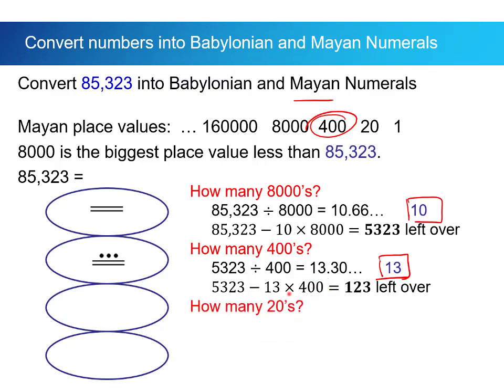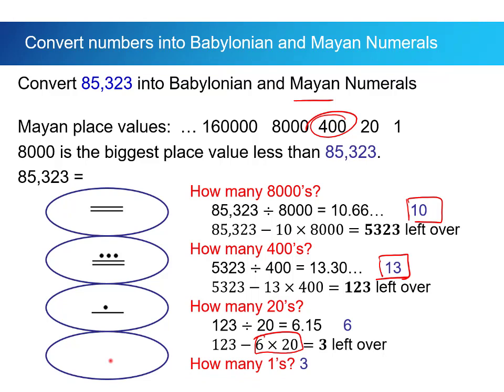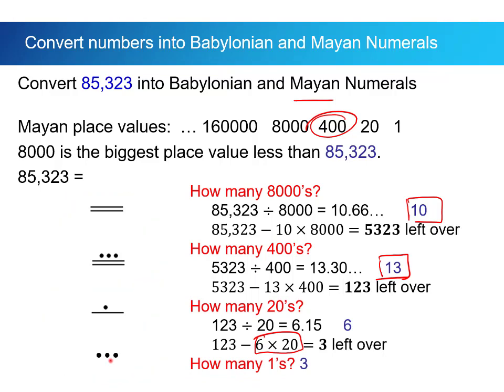How many 20s are there in 123? We do the division. We find out that there are six 20s in there. So, six goes into this next spot down. How much is left over now? 123 minus the six times 20. There's three left over. I'm at the very end. So, that's my answer for the ones spot. And there we have it. Finally, here is our Babylonian number for 85,323.